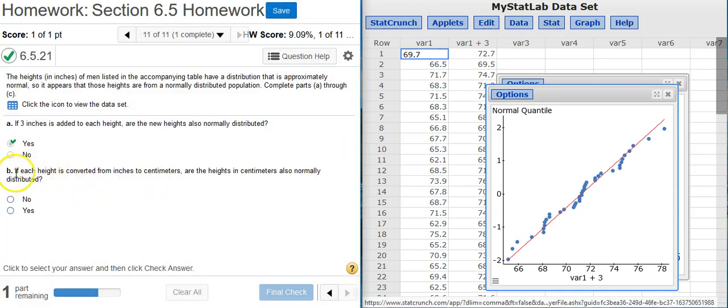Now, part B asks, if each height is converted from inches to centimeters, are the heights in centimeters also normally distributed? Well, to do that, we have to transform from inches to centimeters. And there's 2.54 centimeters for every one inch.